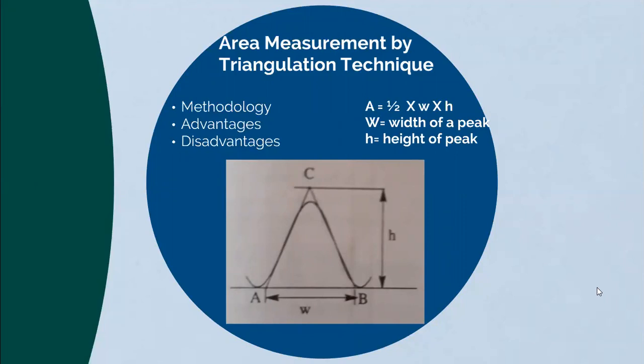The chromatographic instruments are equipped with ball and disc or electronic integrators, which permit precise estimation of peak areas. If such equipment is not available, a manual estimate must be made and the peak areas are measured using different methods. The first method is area measurement by the triangulation technique. Most chromatographic peaks are triangular in shape, and hence the area under the triangular peak is obtained by applying the formula for the area of a triangle: A = ½ × w × h, where w is the width and h is the height of the peak.